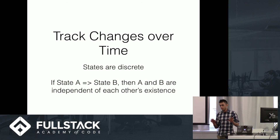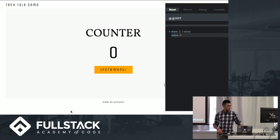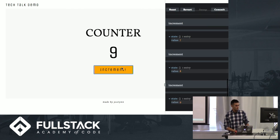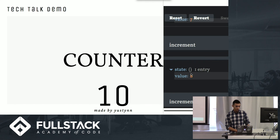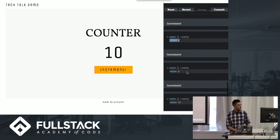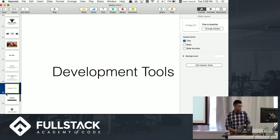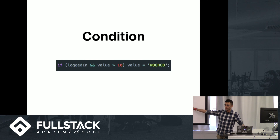You realize that if these are two different states, they're different from each other and you can swap between them really easily. So this brings me to development tools. I've made a pretty simple app to show this — essentially it's just a counter, and you can increment the counter. As I increment the counter, the state changes. To add complexity, I've also included authentication, and I've made a special condition where if the user is logged in and the counter value is 10, the value changes to 'woohoo'.